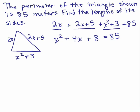This is a quadratic because it has an x squared term. So we're going to have to set this equal to zero and factor. So x squared plus 4x, if I subtract 85 from both sides, you should have minus 77. Subtracting 85 from both sides.